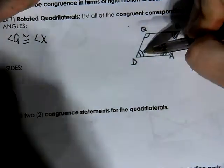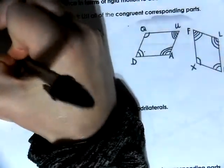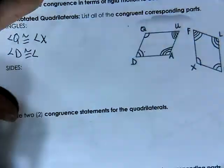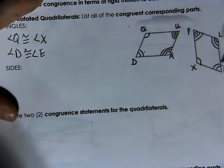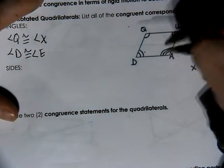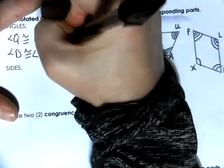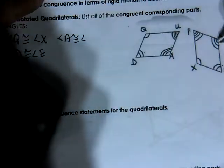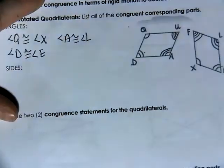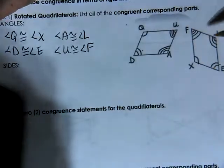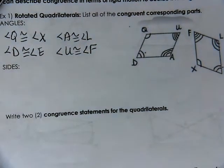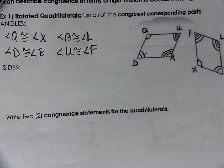Angle D has two arc marks, and it would be congruent to angle E, which also has two arc marks. Angle A has three arc marks and would be congruent to angle L, which also has three arc marks. And finally, angle U would be congruent to angle F because both of these angles have four arc marks. So the angles are actually pretty easy.